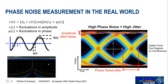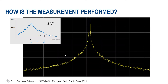So here we have essentially the carrier and these noise traces around the carrier. What we want to know is, for a given offset — let's say some distance from the carrier to another offset much further away — what are the characteristics of this trace? What we want to measure is essentially not the trace, but the area underneath the trace. And what we're going to do is take all of those measurements and standardize them to a one hertz resolution bandwidth.